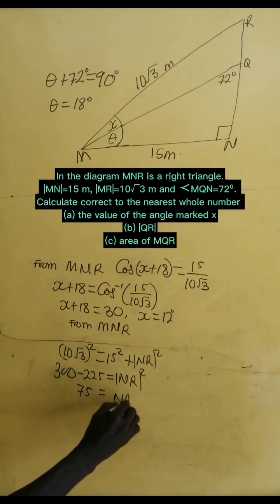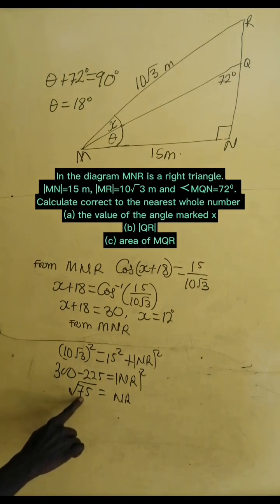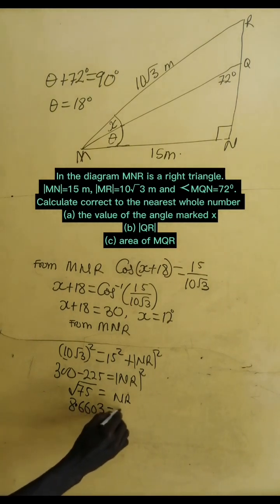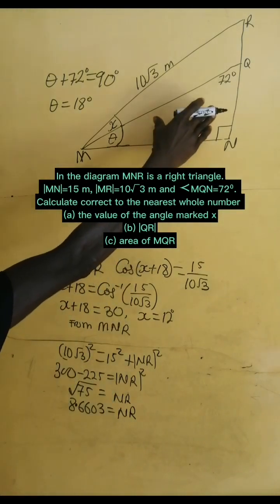So, if we take square root of both sides, we have square root of 75 equals NR. And this, in decimals, will give us 8.6603 meters equals NR.